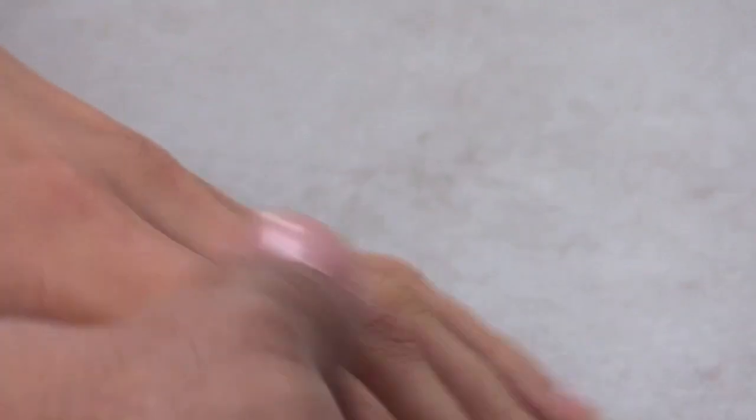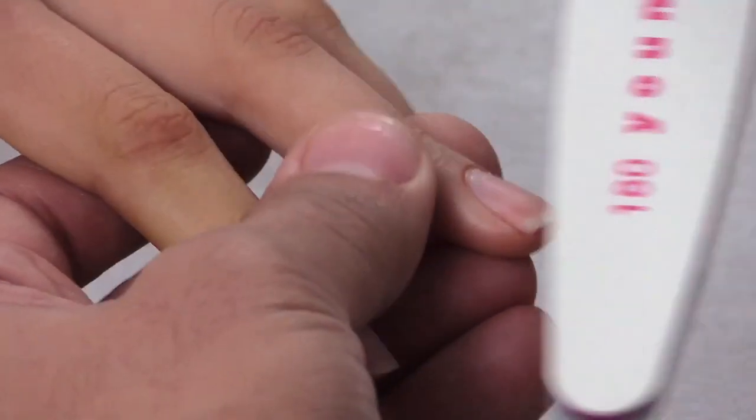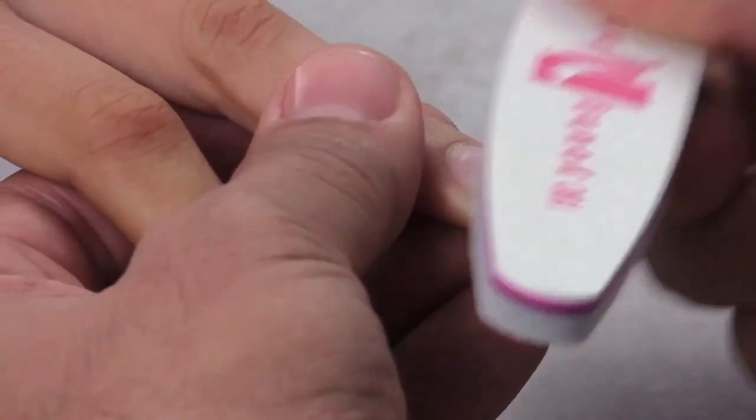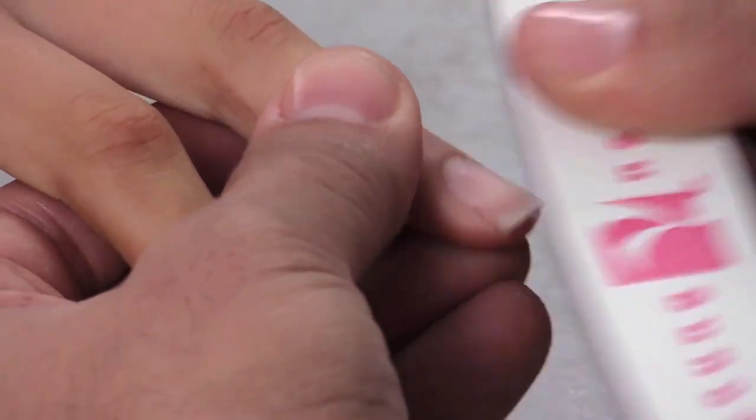Once you're done pushing all the cuticles back, we're going to use the 180 buffer on our combo file to gently remove shine from the surface of the natural nail.